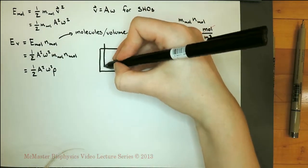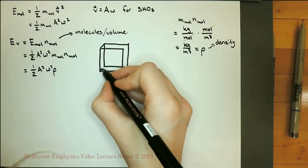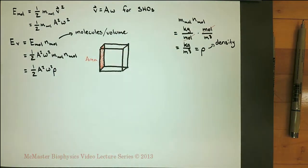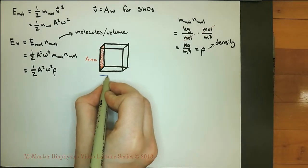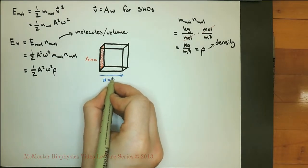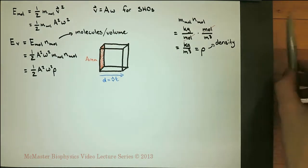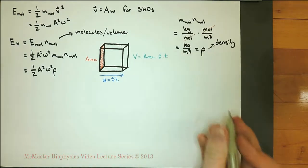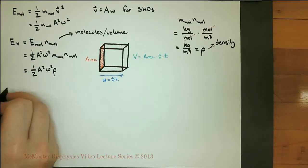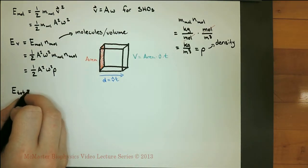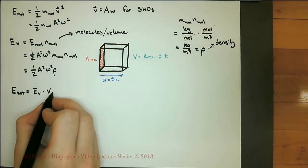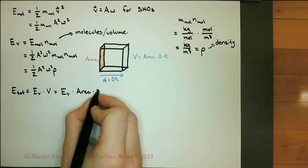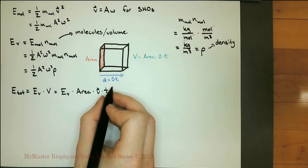Imagine a cube in which air molecules are being disturbed by a sound wave. The area in red is the area the sound wave covers. D is the distance traveled by the wave and is equal to wave velocity times time. The volume is equal to the area times the wave velocity times time. The total energy in the cube is equal to the energy per unit volume times the volume, which is equal to the energy per unit volume times the area times the wave velocity times time.